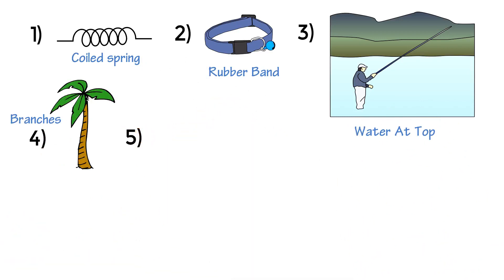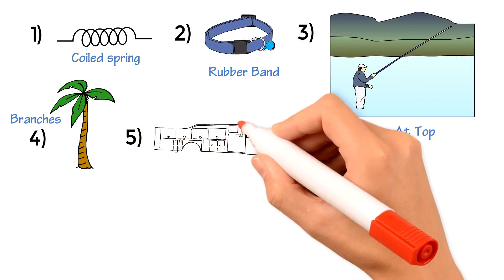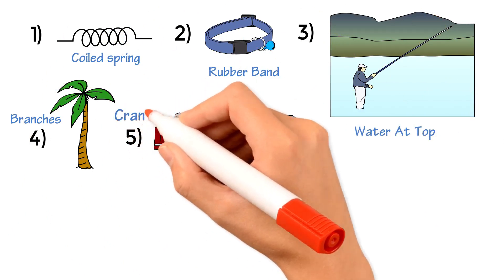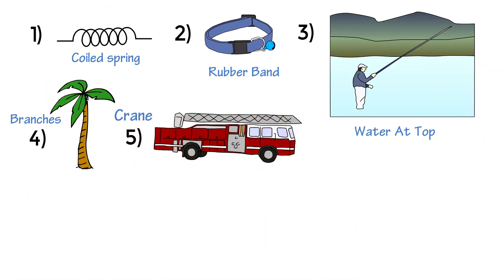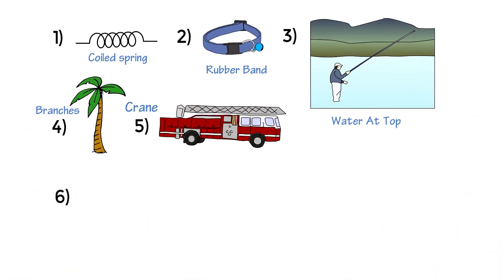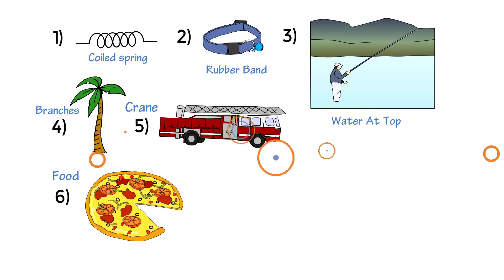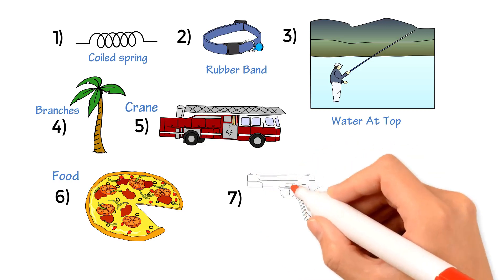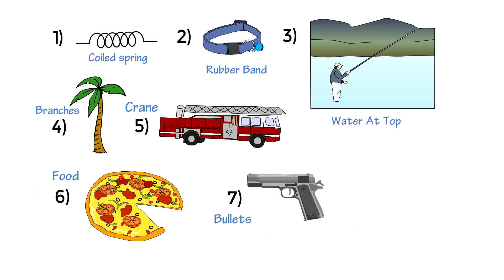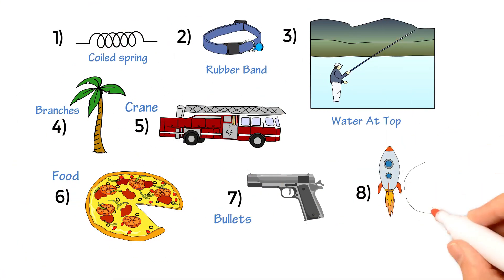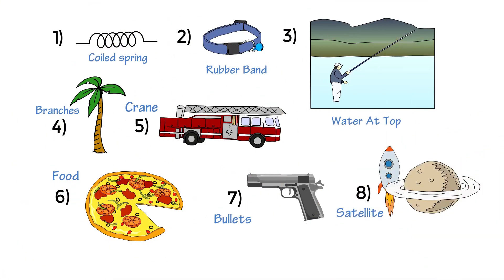Number four, tree branches high up in a tree have Potential Energy. Number five, when a crane swings a wrecking ball up to a certain height, it gains more Potential Energy and has the ability to crash through buildings. Number six, the food we eat has Chemical Potential Energy — as our body digests it, it provides us with energy for basic metabolism. Number seven, bullets before they are fired from a gun possess Potential Energy. Number eight, a satellite before it is launched and placed in an orbit possesses Potential Energy.